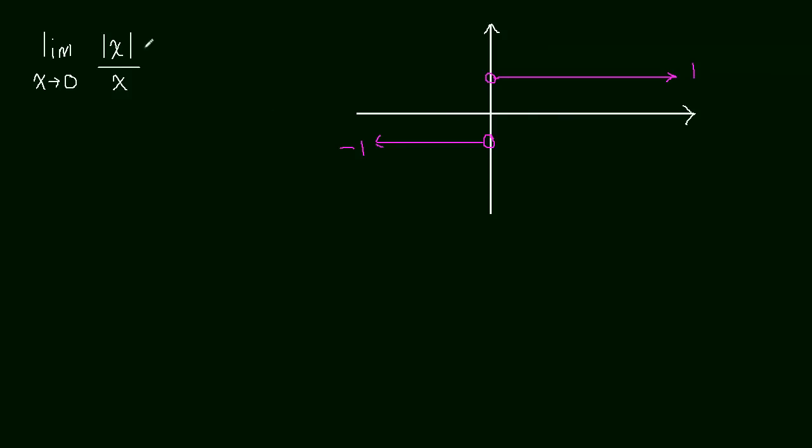All right, here I have the function, the absolute value of x over x, graphed. And let's just do a little bit of analysis and make sure we understand why f of x equals the absolute value of x over x looks like that.